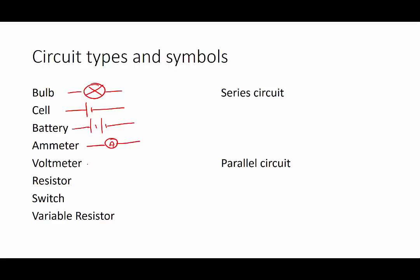A voltmeter, which is used to measure the voltage, a resistor, which is used to reduce the current through a circuit, a switch, which turns your circuit on and off, and a variable resistor, which is used to change the electric current in the circuit.